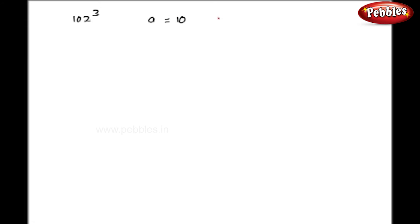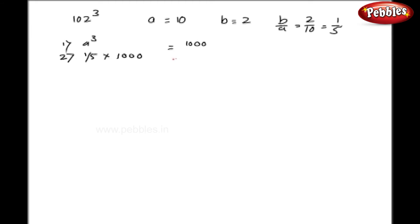Let us take one more example of three digits — 102 cube. Here my a = 10 and b = 2, so b upon a = 2 by 10, or 1 by 5. As the first part, I will do a cube, that is 10 cube, giving 1000. Second part: 1 upon 5 into 1000 gives 200. Third part: 1 upon 5 into 200 gives 40. As the fourth part: 1 upon 5 into 40 gives 8.